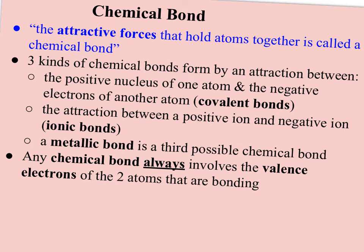Electrons are said to be shared between the two atoms. Or there can be attraction between a positive ion and a negative ion. Those are called ionic bonds, and those occur when atoms actually transfer electrons from one atom to another. And then the third possibility is a metallic bond, and that forms only between the same type of metal. So gold, pure gold, has metallic bonds between its atoms. Pure silver has metallic bonds between its atoms. So a chemical bond always involves the valence electrons of the two atoms that are bonding. It's just a matter of what's going on with those valence electrons. Are they being shared, or are they being transferred?